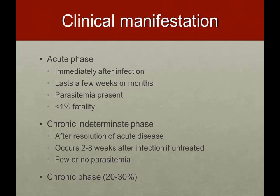Clinical manifestation can be divided into two groups: acute phase and the chronic phase. The acute phase happens right after infection and can last for weeks to months. At this time you can have parasitemia, and there's less than 1% fatality. It usually lasts about two to eight weeks. After this acute phase, there's an indeterminate phase where patients are asymptomatic and parasitemia is pretty low or none at all, which is usually of no clinical significance.